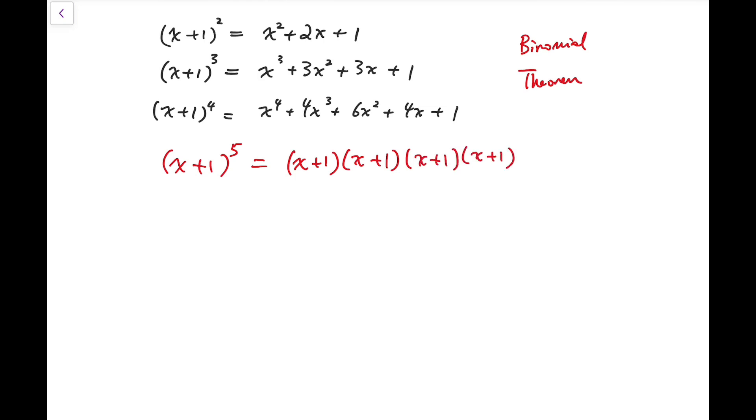When we expand and remove the brackets, for each term in the expansion we choose either x, labeled in yellow, or 1 from each bracket.